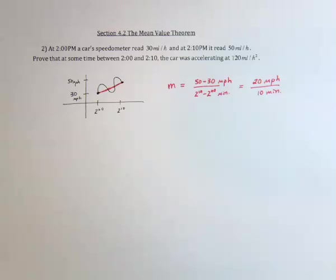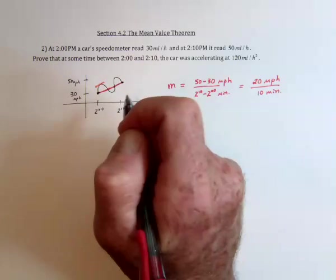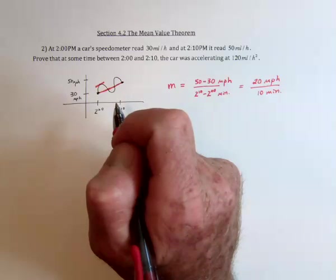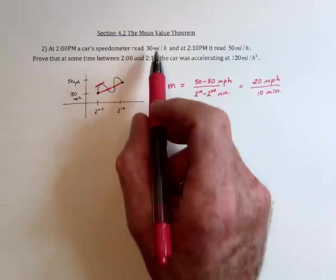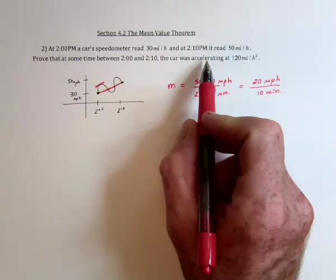So then the mean value theorem says you take the slope of that line, and there has to be a place somewhere in there when the slope of the tangent line, or the derivative, is the same. So what do you think? Well, when you've got a velocity and you take the derivative, you then get acceleration.